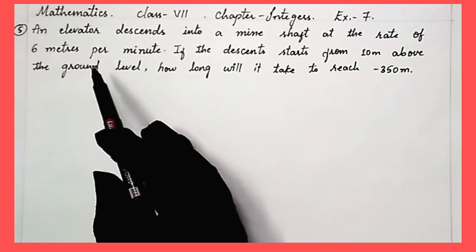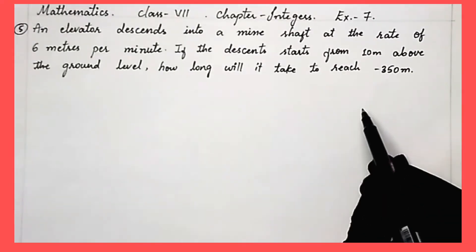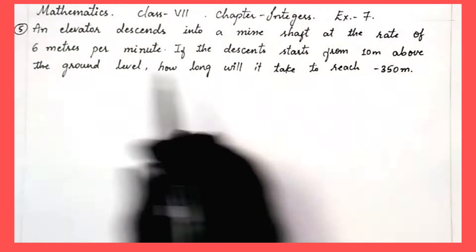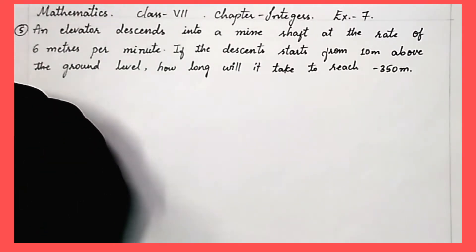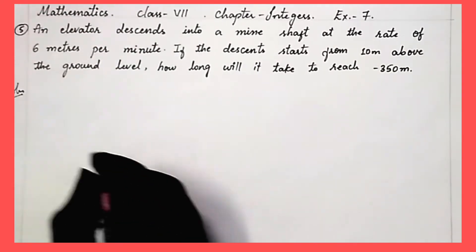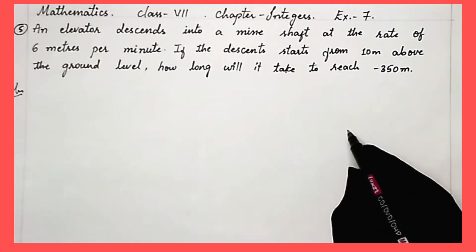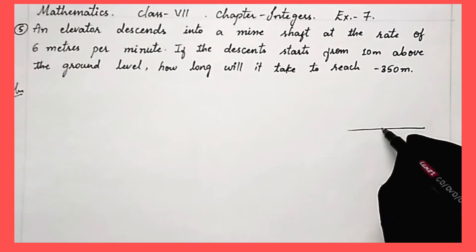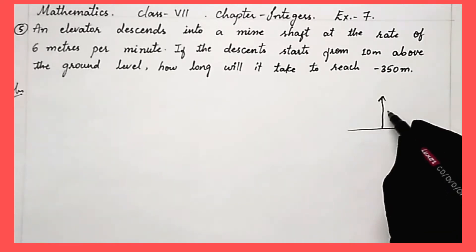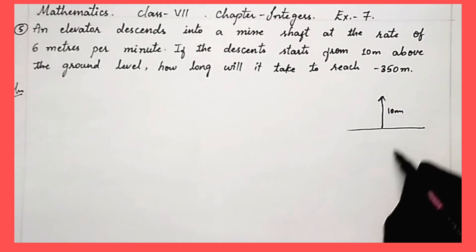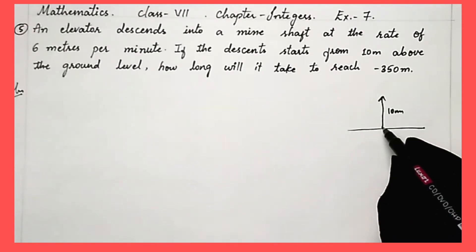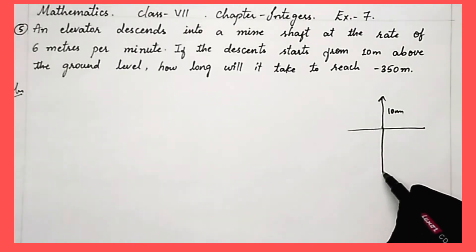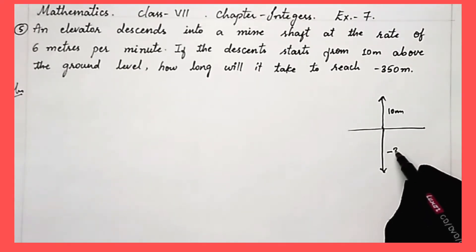So we have to find out the time taken by an elevator to complete the whole distance. The elevator is moving at the rate of 6 meters per minute. So let's solve this problem. Suppose this is the ground. Above the ground, 10 meters above, the elevator is starting its journey, and it is moving under the ground to -350 meters.